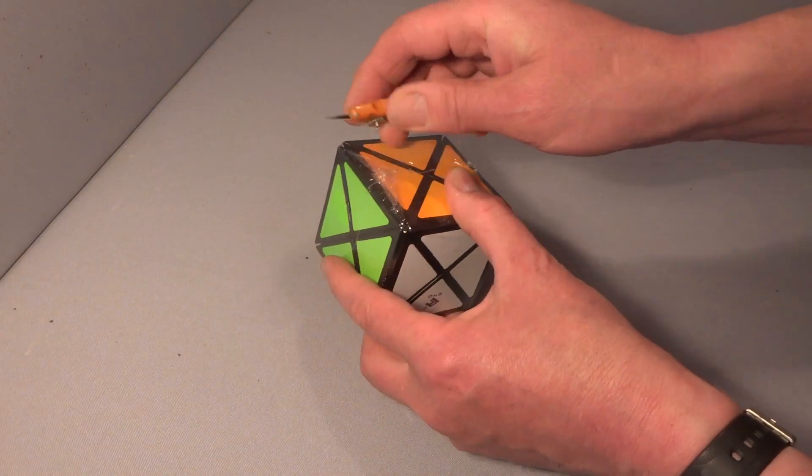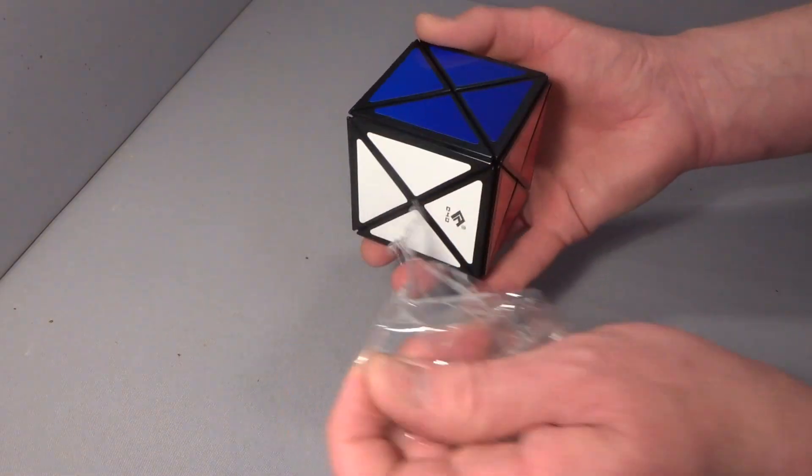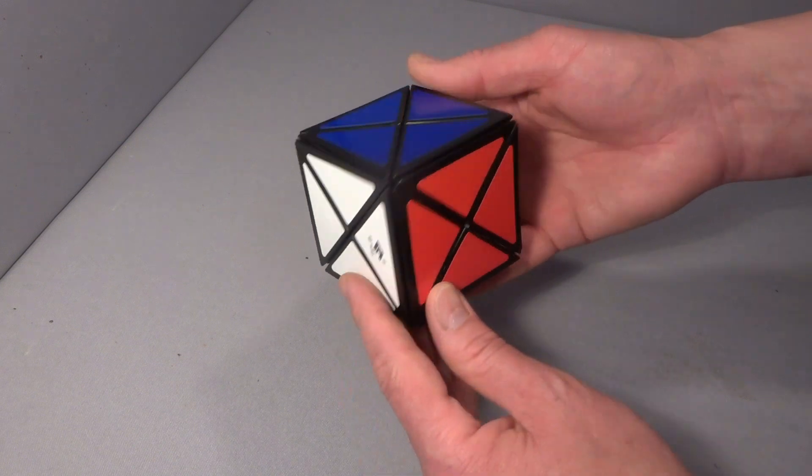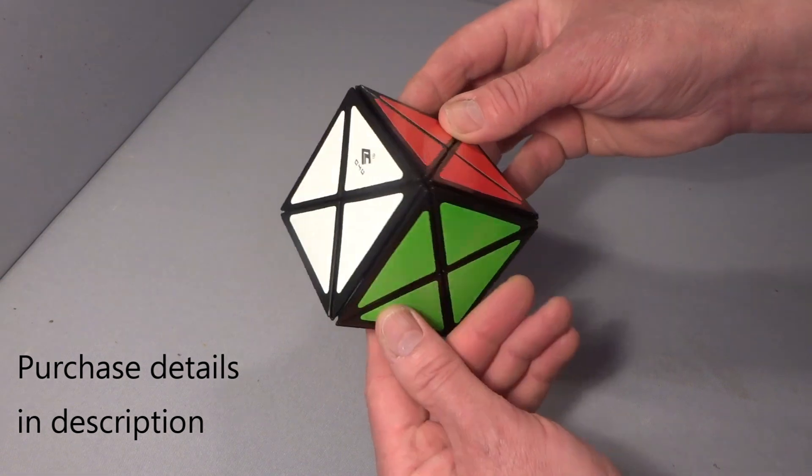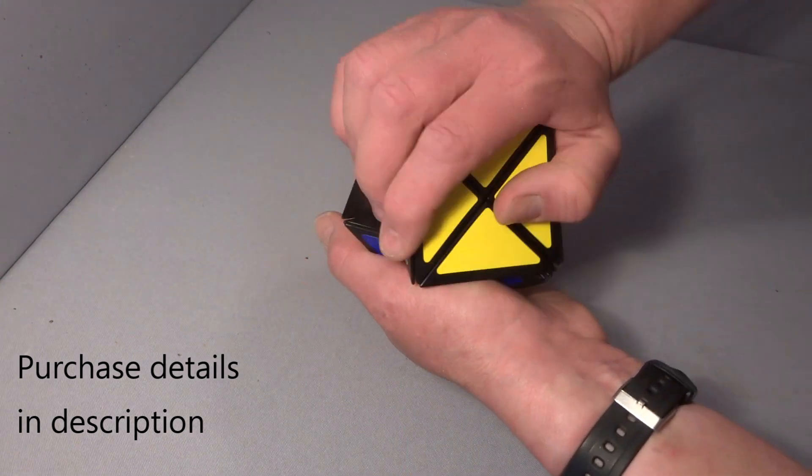The puzzle has a long history and is somewhat iconic within the twisty puzzle community. It's available in black or white plastic and there is a limited clear version too. There are also sticker variations and a black and white one.